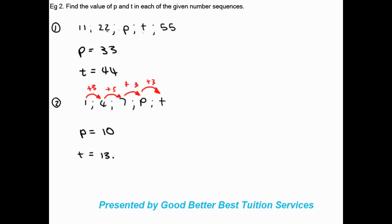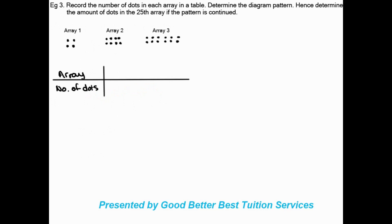Now for the geometric example. We need to record the number of dots in each array in a table. Array 1 has 4 dots. Array 2 has 8 dots. Array 3 has 12 dots. We've recorded the table and now need to determine the rule for this pattern.